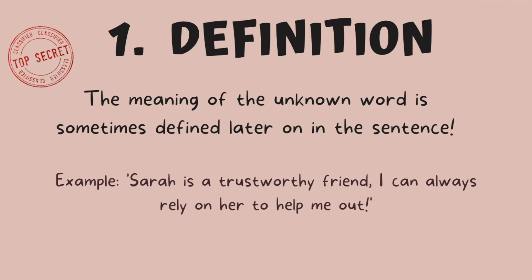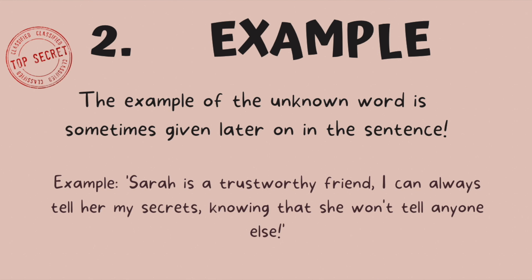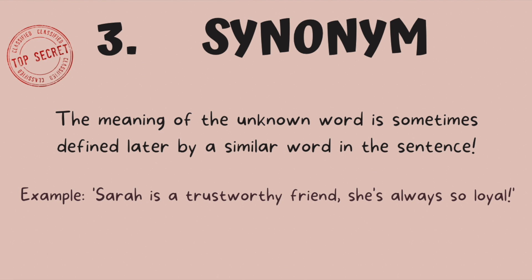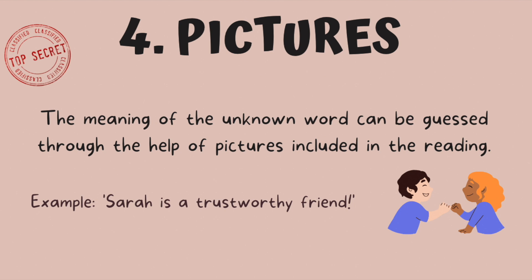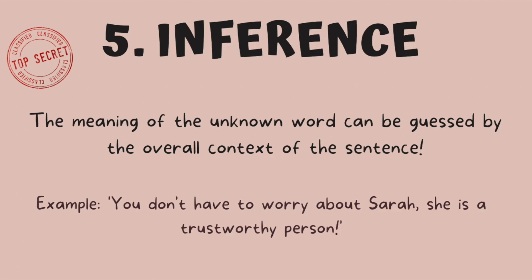Now that we have our paper ready for writing down our cool tips for context, let's look at a few ways we can identify context in our readings. The first way is definitions — the meaning of the unknown word is sometimes defined later on in the sentence. The second way is examples — the example of the unknown word is sometimes given later on in the sentence. Third, synonyms — the meaning of the unknown word is sometimes defined by a similar word in the sentence. Fourth, pictures can also help us guess the meaning of an unknown word. The last one is inference — the meaning of the unknown word can be guessed by the overall context of the sentence, which is basically what is being talked about.